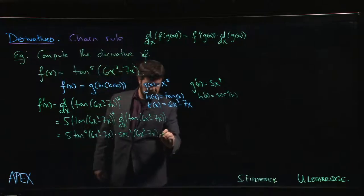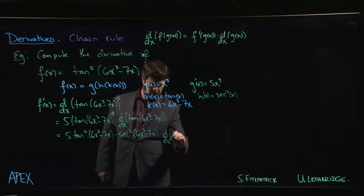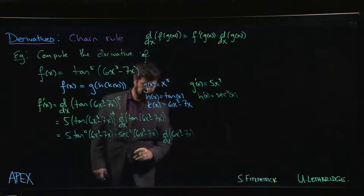But then we multiply by the derivative of that function. So 6x cubed minus 7x, right?